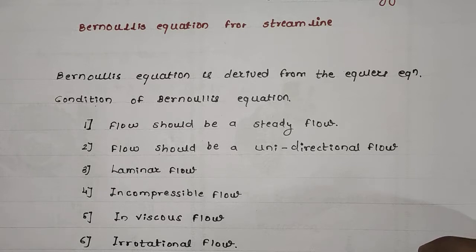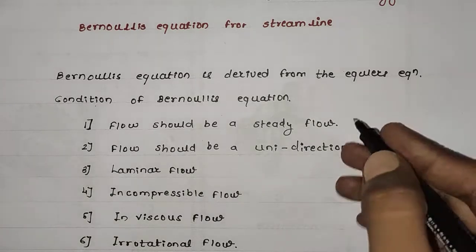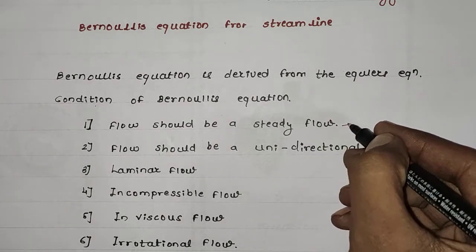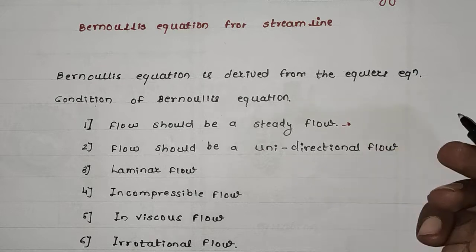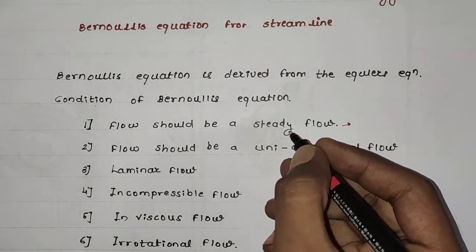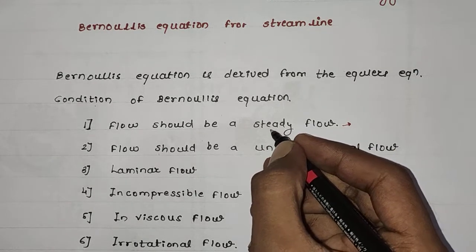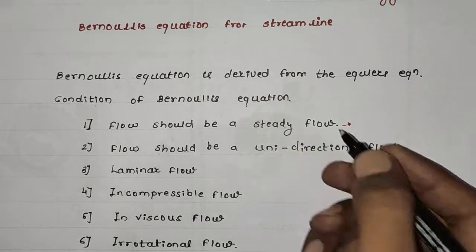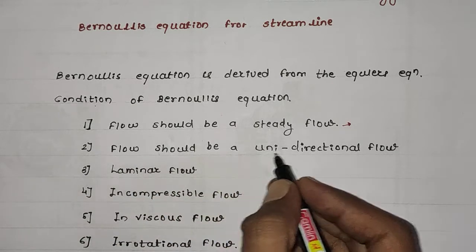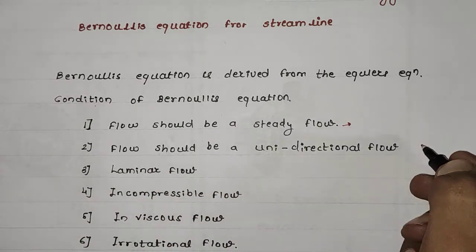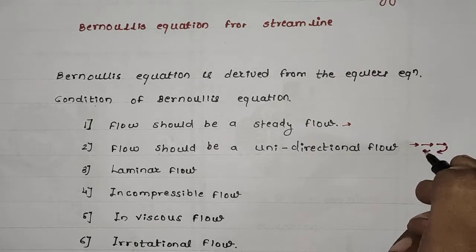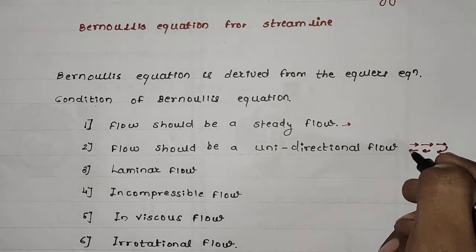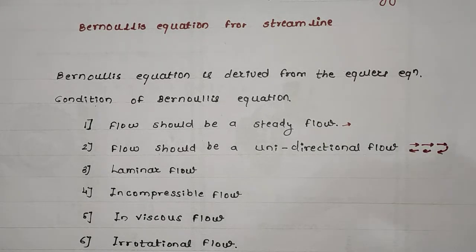The first condition is the flow should be a steady flow. Steady flow means the velocity of the fluid with respect to time does not change. The second condition is the flow should be unidirectional, meaning the flow travels only one path and does not trace the opposite or reversal path.